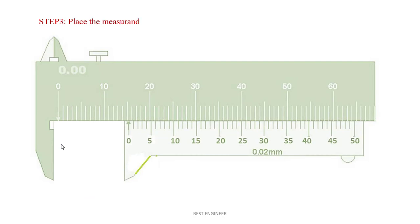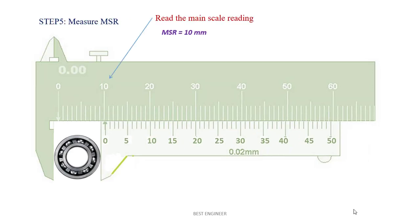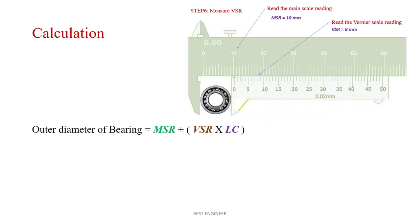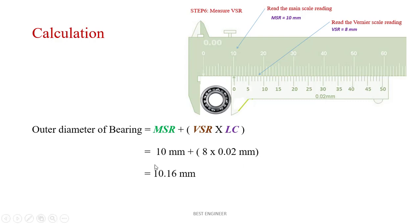Step 2: Open the jaws and place the object to be measured, then close the jaws. Now measure the main scale reading — here the main scale value is 10 mm. Then note down the vernier scale reading: which line coincides with the main scale. Here, line 8 is coinciding with the main scale. Now, the outer diameter of the bearing is equal to main scale reading plus vernier scale reading multiplied by least count. Here, the main scale value is 10 mm and vernier scale value is 8, and the least count is 0.02 mm. So, the outer diameter of the bearing is 10.16 mm.